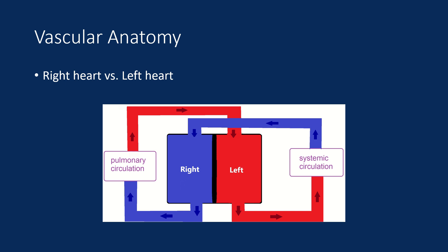The first thing to understand in vascular anatomy is the basic circuitry of the body. It's important to conceptually separate the right side of the heart from the left side. The heart is one organ, but in reality it's made up of two separate pumps. The left side pumps blood to the systemic circulation, delivering oxygenated blood to the body. Blood from the body then drains into the right side of the heart, which pumps deoxygenated blood to the lungs — the pulmonary circulation — where it is oxygenated and returns to the left side.